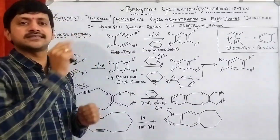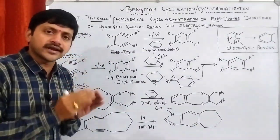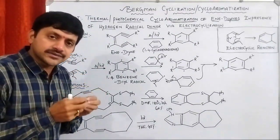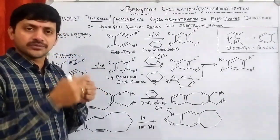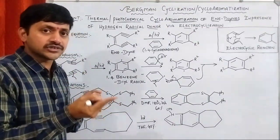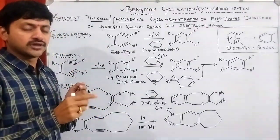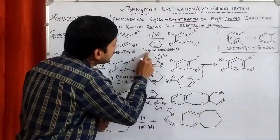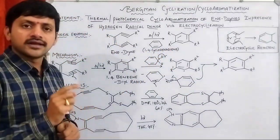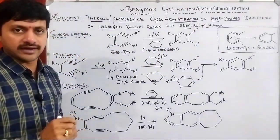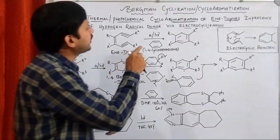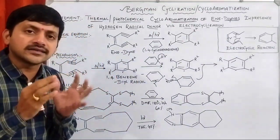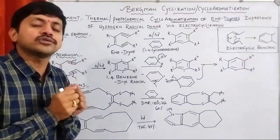The reactant is an ene-diyne system, meaning the reactant molecule contains both a double bond and a triple bond. It is subjected to cyclization in the presence of either thermal or photochemical conditions, using 1,4-cyclohexadiene as a hydrogen radical donor, and can be converted into the corresponding aromatic compound.